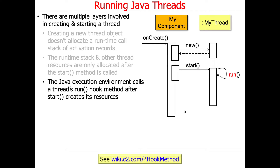After everything's up and running, after we've got a thread stack, the Java execution environment will arrange to invoke the run hook method where your user-provided code will be invoked. That's the code you supplied, either through extending thread or by implementing Runnable. A hook method is just a virtual method that gets called back as part of a framework — this is an example of a framework.